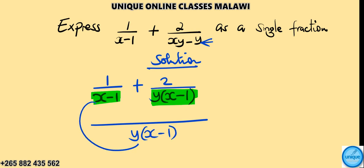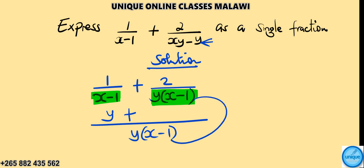So we're going to multiply up. Y times 1 gives us y, then plus — multiplying up on the other side — 1 times 2, that's easy: 2.